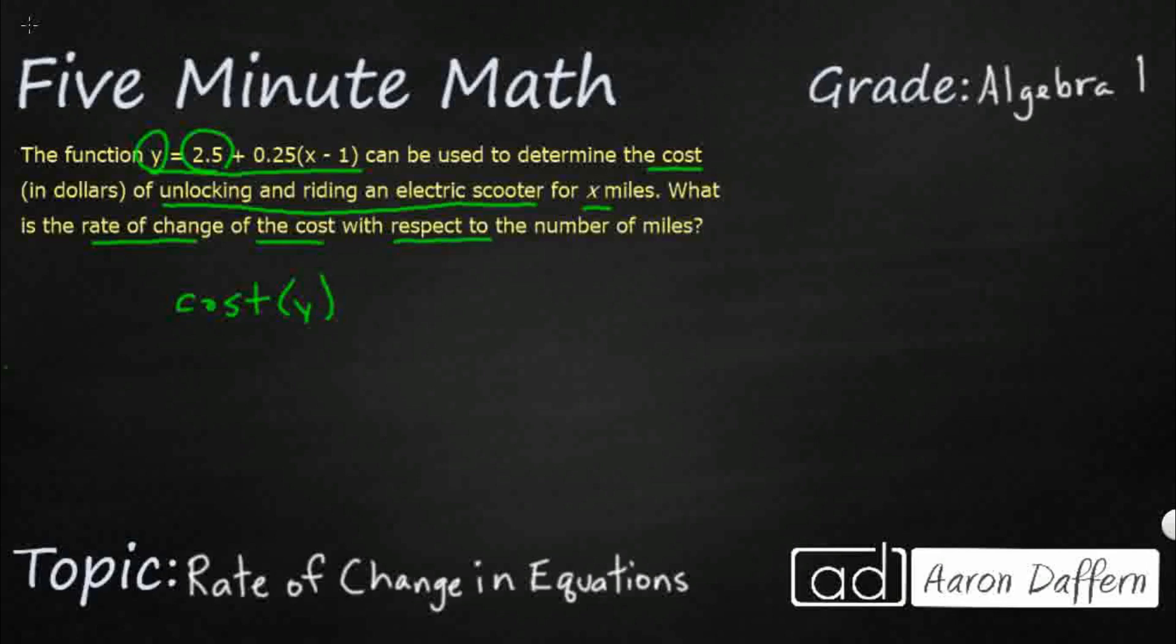And that's going to be my y, with respect to, so that's going to give me a ratio, the cost per number of miles. All right, so we can say cost, which is y over miles, x. Does that look familiar?